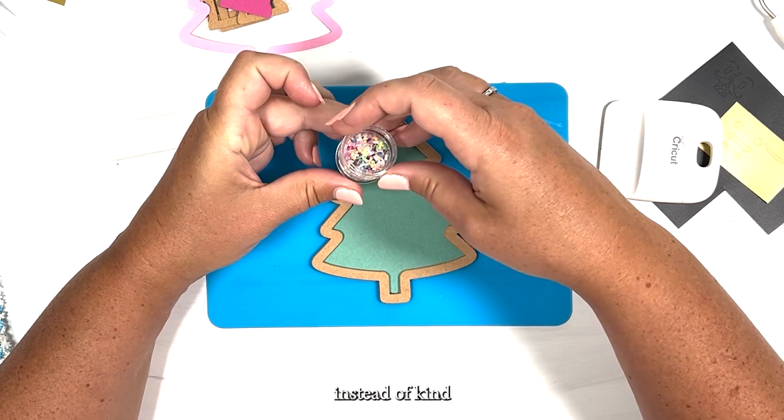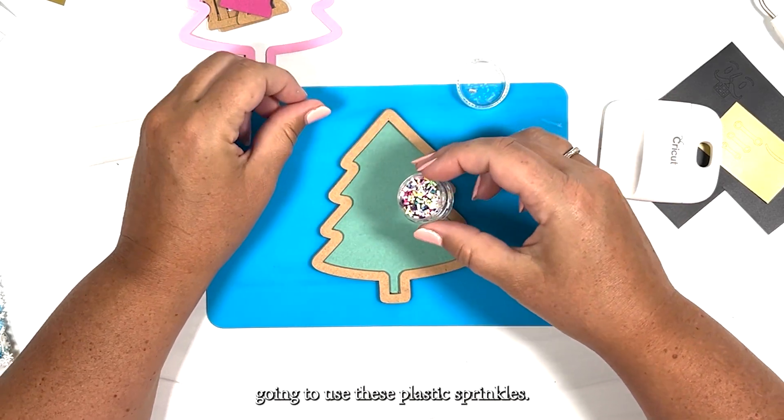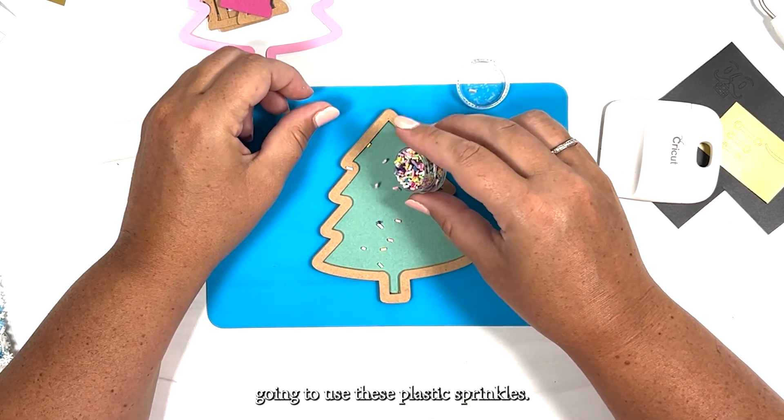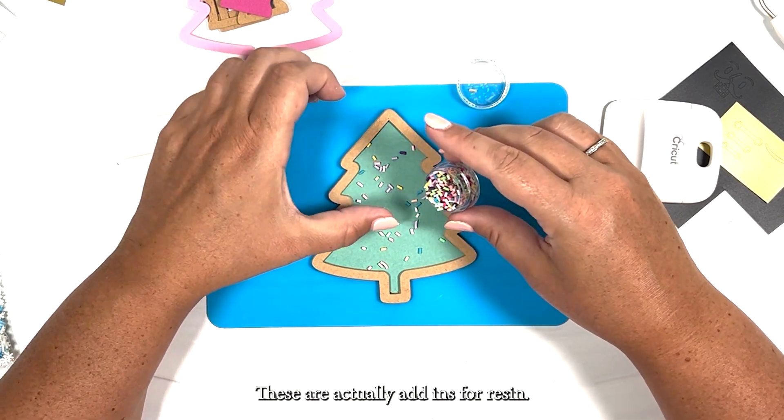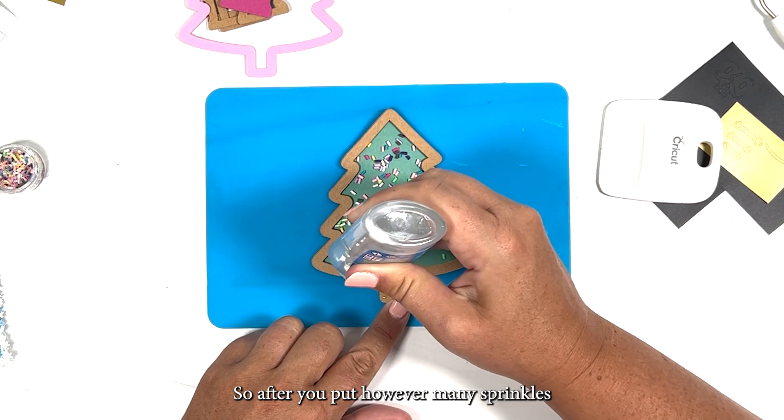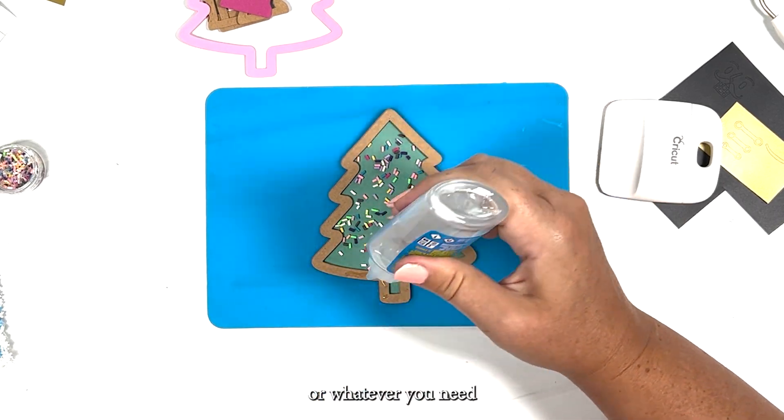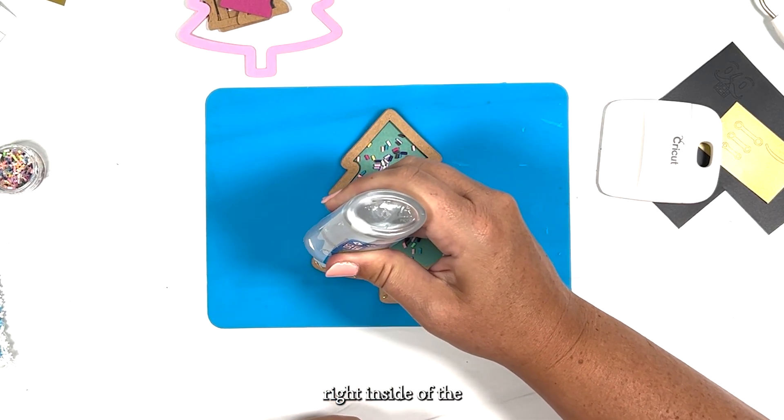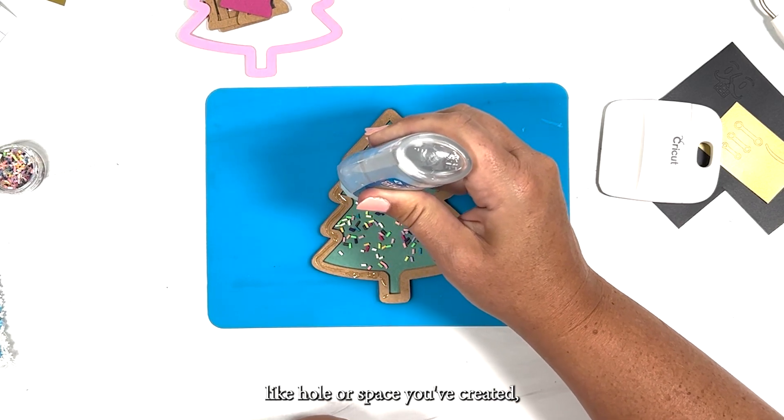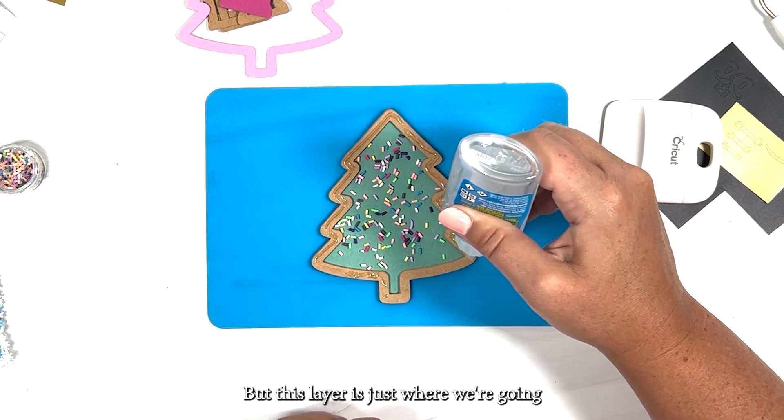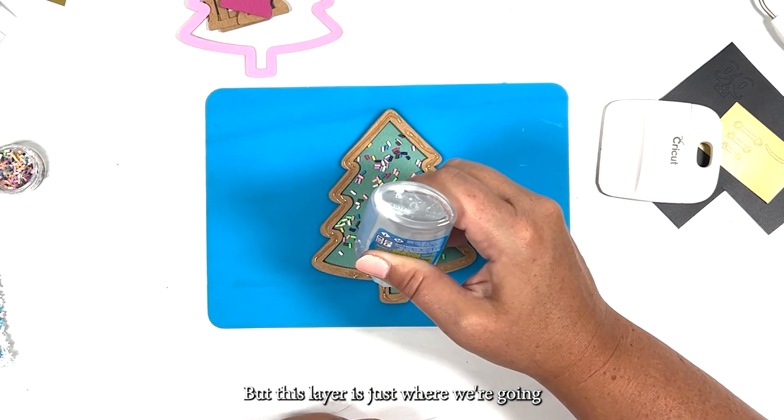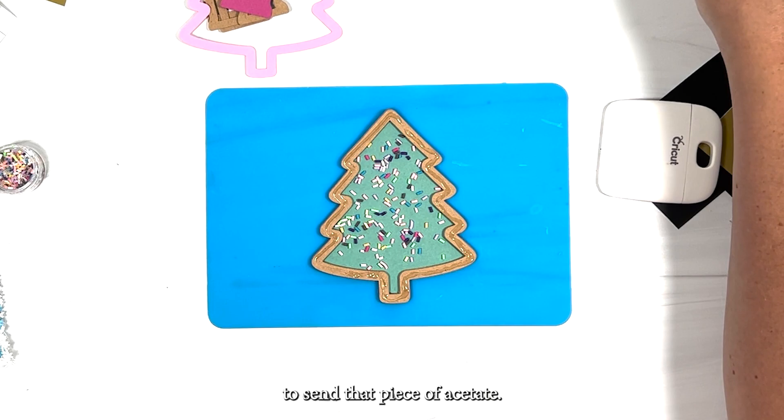So for the Christmas tree instead of kind of having ornaments, I'm going to use these plastic sprinkles. These are actually add-ins for resin. So after you put however many sprinkles or whatever you need right inside of the hole or space you've created, be a little bit more careful with the glue this time. But this layer is just where we're going to set that piece of acetate.